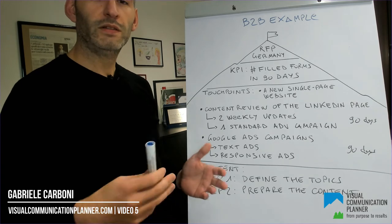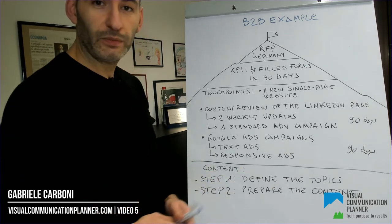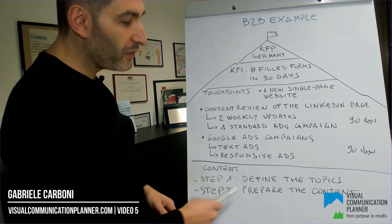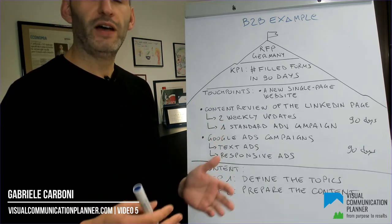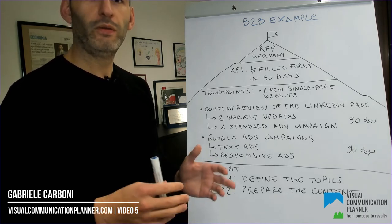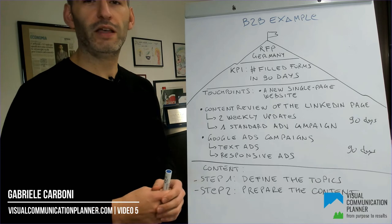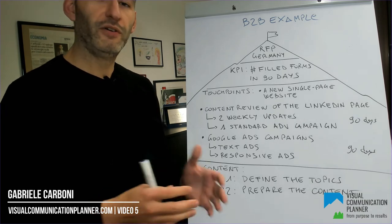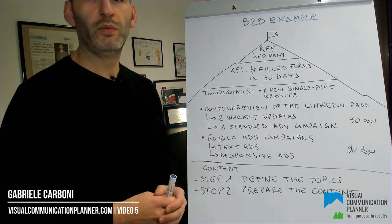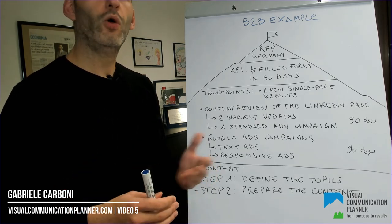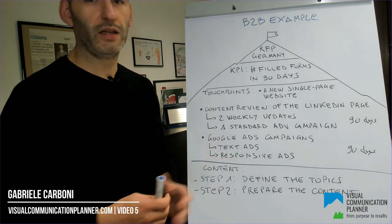So what's next about contents? Step 1: define the topics. Step 2: prepare the content for all the channels and activities you have defined. Please note that it is highly recommended to hire a copywriter to write your text, a photographer for your pictures and so on. You can use the Visual Communication Planner as a brief for all the professionals or colleagues you need to involve in the process of creating content.